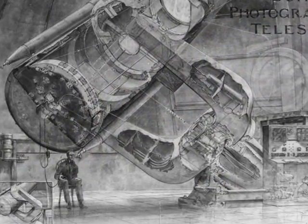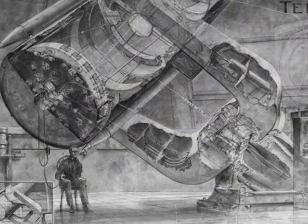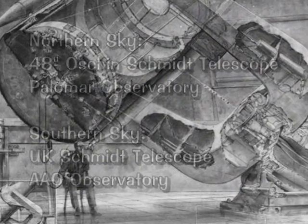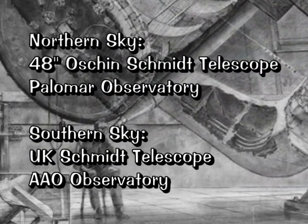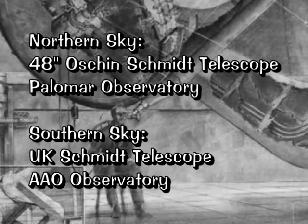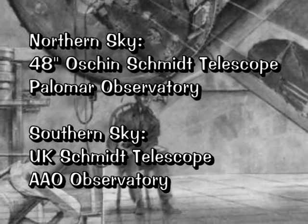It gets a little complicated, so I'll give you the short version. All of the images in the northern sky are from the 48-inch Oschin Schmidt Telescope at the Palomar Observatory near San Diego.